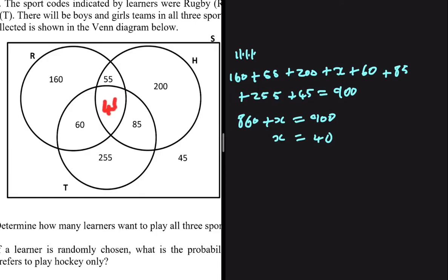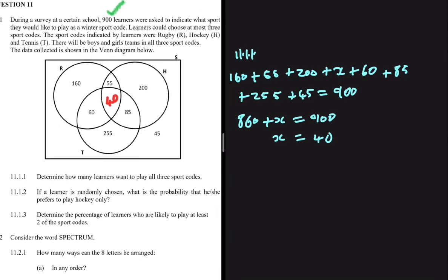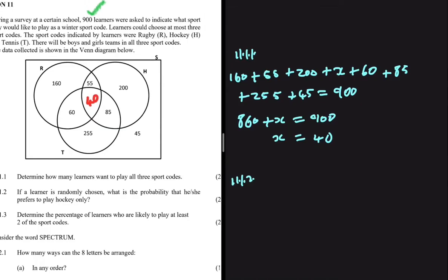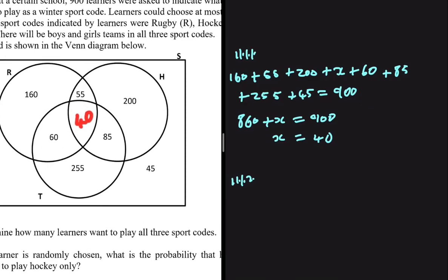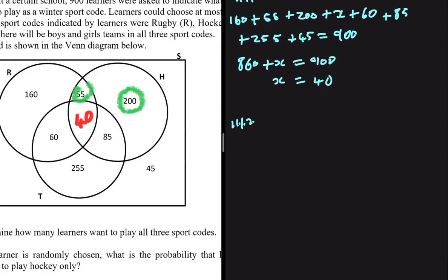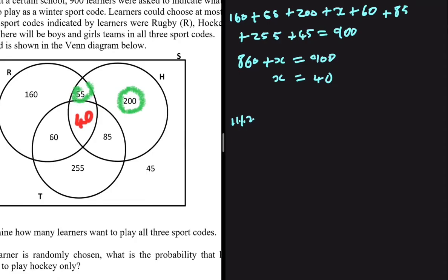Let's look at question 11.1.2: if a learner is randomly chosen, what is the probability that he or she prefers to play hockey only? The number of learners who prefer to play only hockey is 200. The 85 who prefer hockey and tennis cannot be included, the 55 who prefer hockey and rugby cannot be included, and the 40 who prefer all three sports cannot be included either.